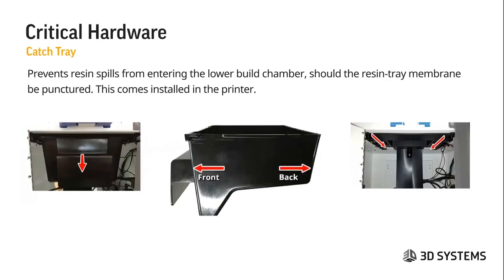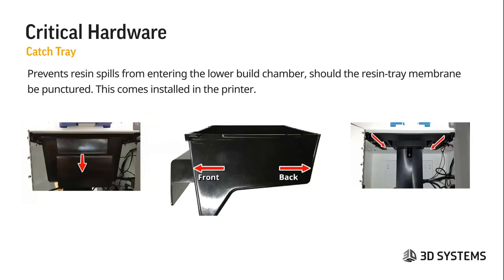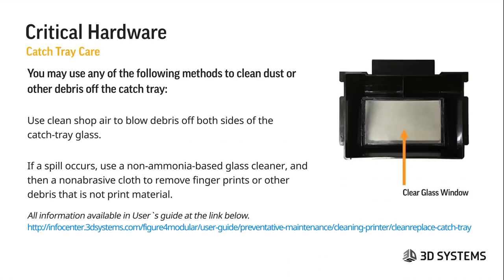The catch tray has a front and back side and comes already installed in the printer. It prevents resin spills from getting into the lower chamber should the resin tray membrane be punctured or if there are other spills. If spills or debris get onto the glass, it must be cleaned with a non-ammonia based cleaner and a non-abrasive cloth. Use clean shop air to blow any debris off both sides. Smudges, lines, or marks on this glass will come through and can cause print defects or part failure.